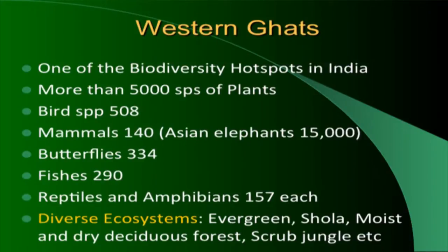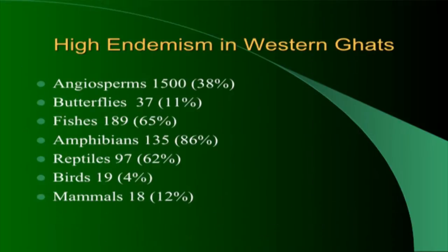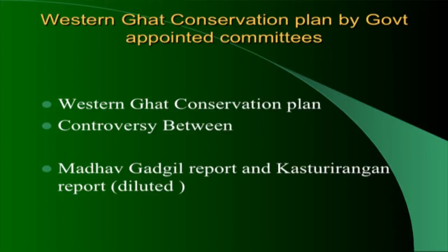EVS should not be based only on textbooks. For the Western Ghats, you can find out data for your own region. The Western Ghats is one of India's biodiversity hotspots, with 15,000 Asian elephants and diverse ecosystems. It also shows high endemism.